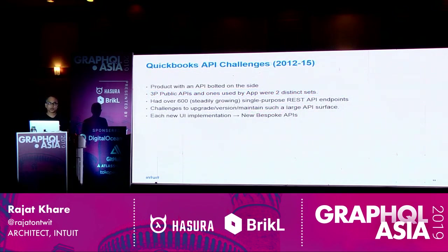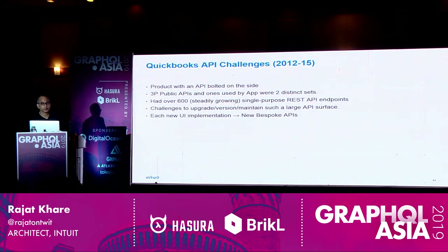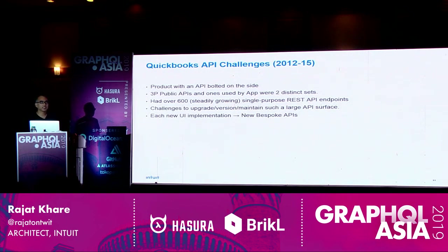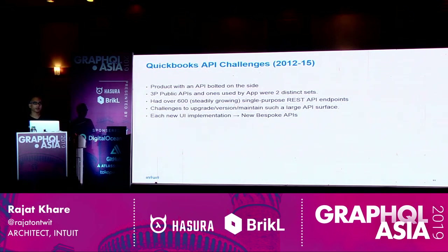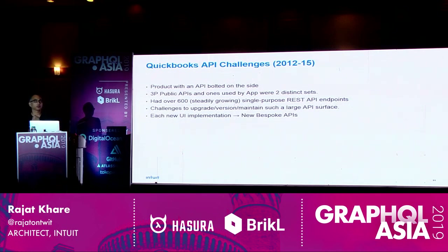Revisiting the challenges: we were a product with APIs bolted on the side, with two distinct sets of application APIs to manage. Every time a new experience came up needing a unique subset of attributes, it created a new API. Ours is a financial accounting application dealing with money-in and money-out operations, general ledgers, accounting, managing customers and expenses — not just one or two concepts, but probably 50 to 100 domain object concepts.